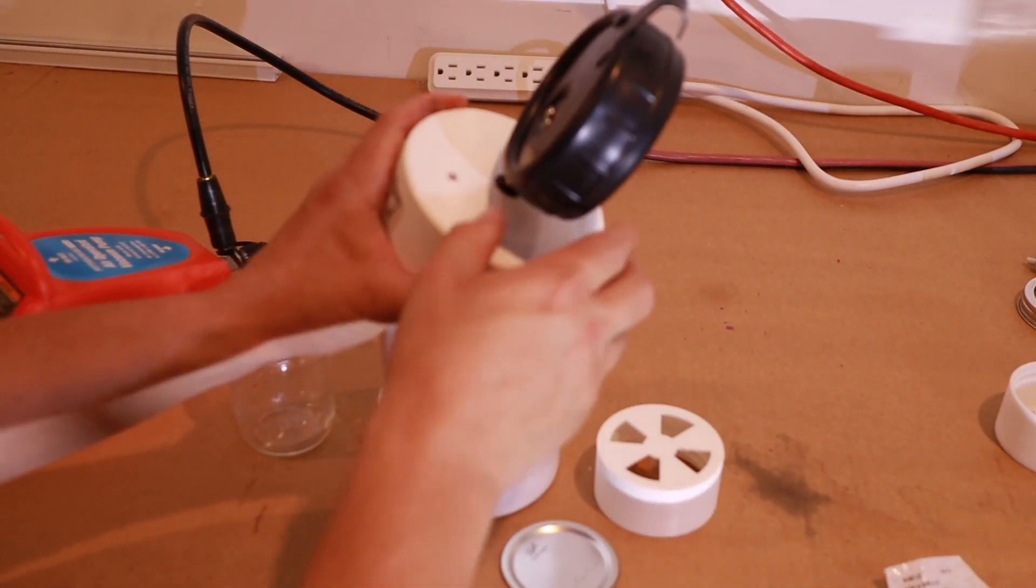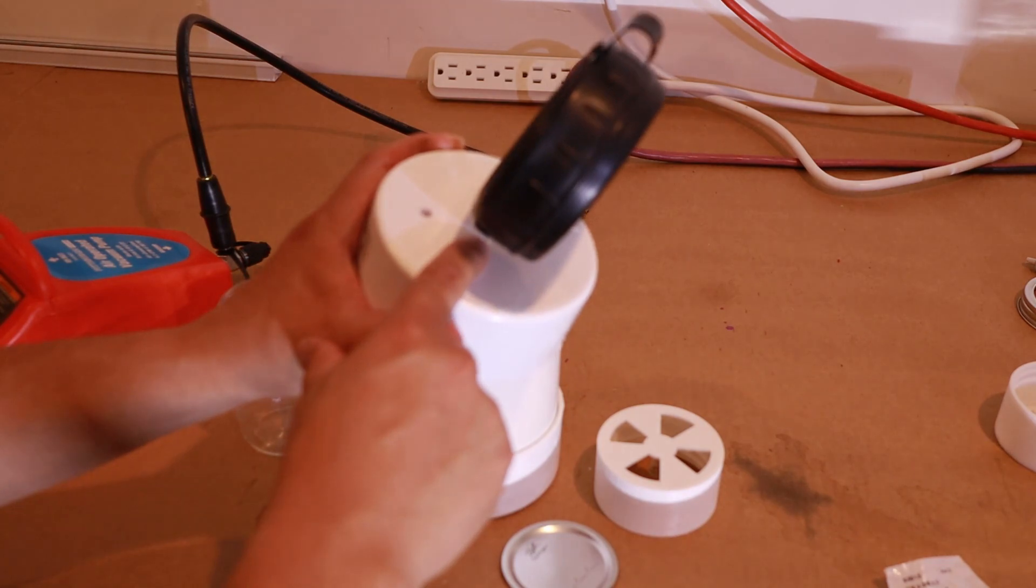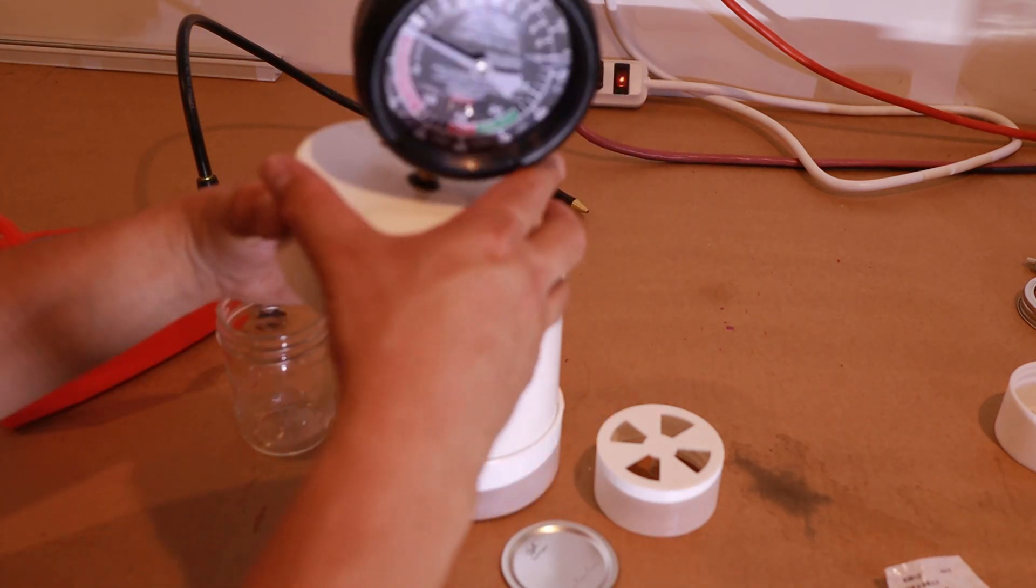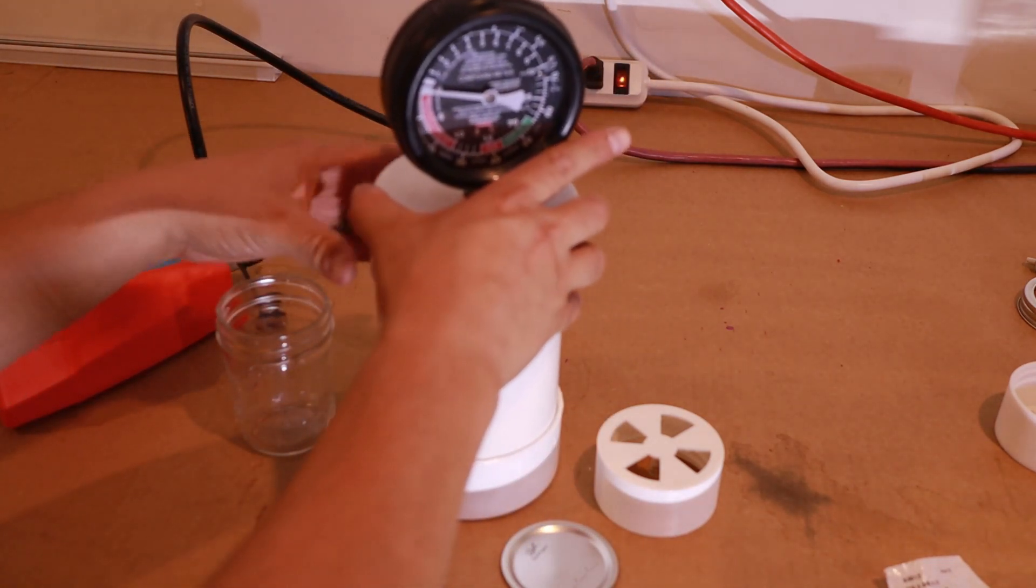On the other cap, drill a hole for your vacuum tube. This hole is just for the gauge, just so you can see how much vacuum I can pull.